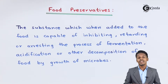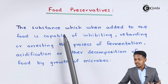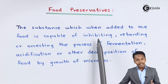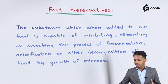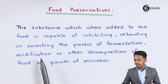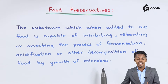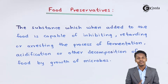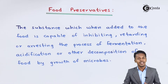Now let us understand the definition of food preservatives. A food preservative is a substance which, when added to food, is capable of inhibiting, retarding, or arresting the process of fermentation, acidification, or other decomposition of food by the growth of microbes on it. Substances that inhibit or retard the growth of microbes are basically known as food preservatives.